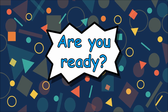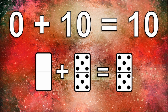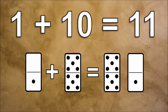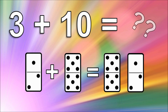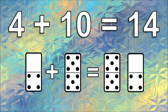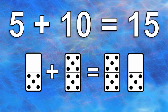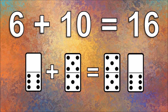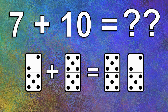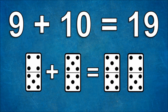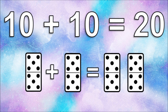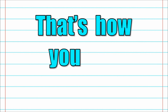Okay kids, that was great. Now we're gonna switch the numbers around starting at zero plus ten and go up to ten plus ten. Are you ready? Let's go. Zero plus ten is ten. One plus ten is eleven. Two plus ten is twelve. Three plus ten is thirteen. Four plus ten is fourteen. Five plus ten is fifteen. Six plus ten is sixteen. Seven plus ten is seventeen. Eight plus ten is eighteen. Nine plus ten is nineteen. Ten plus ten is twenty. That's how you add by ten.